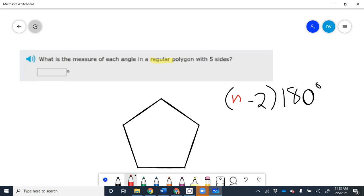Good. Right, exactly. So we're going to do 5 minus 2 times 180. Isn't that 3 times 180?